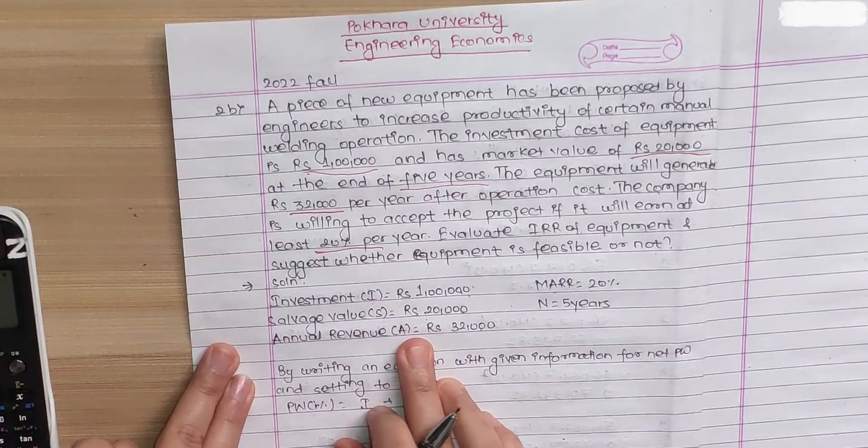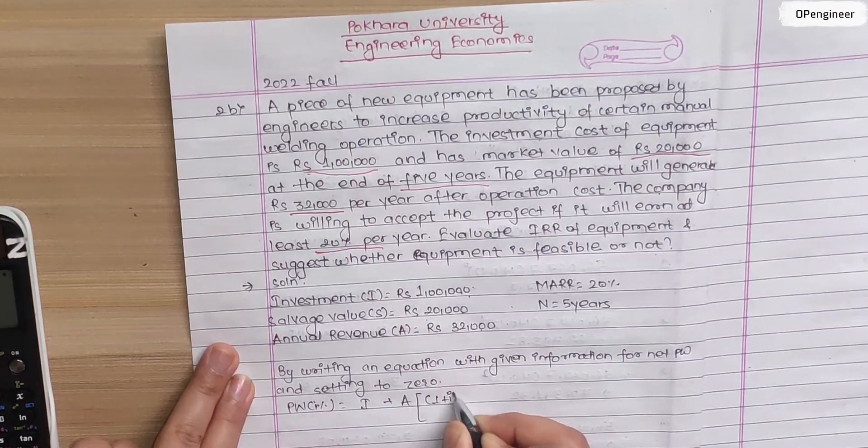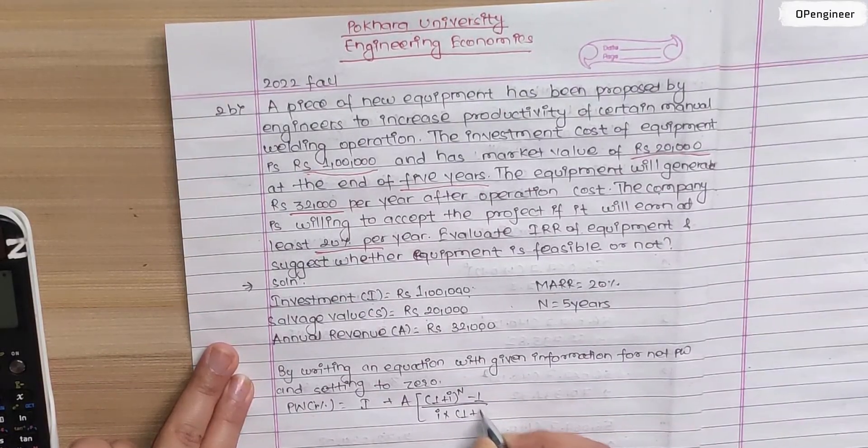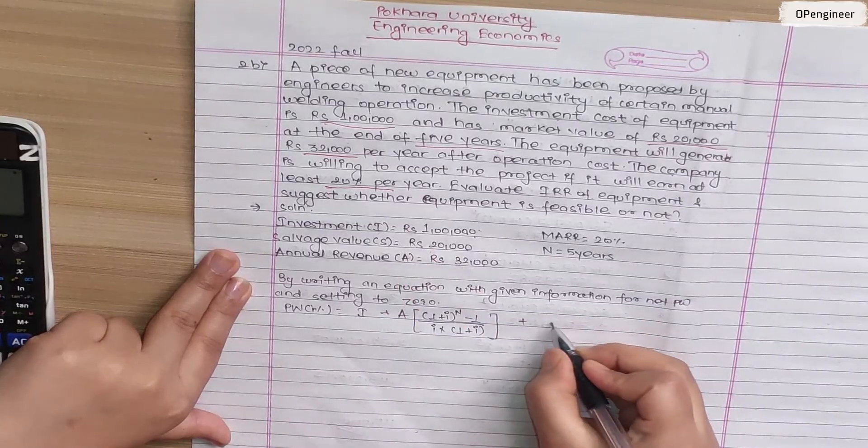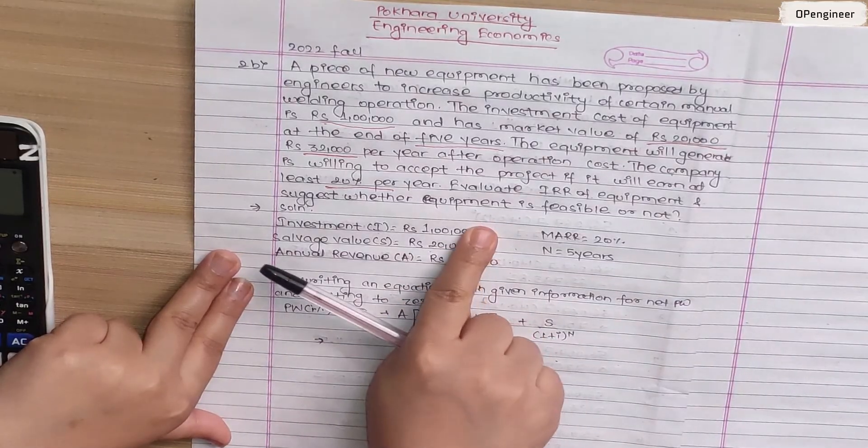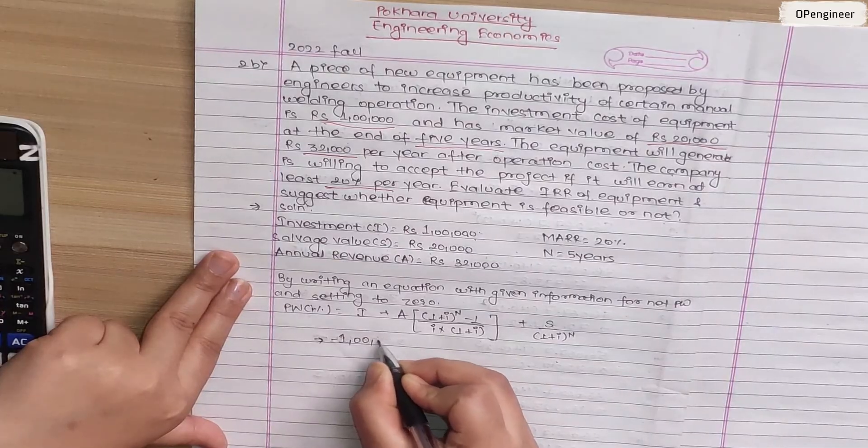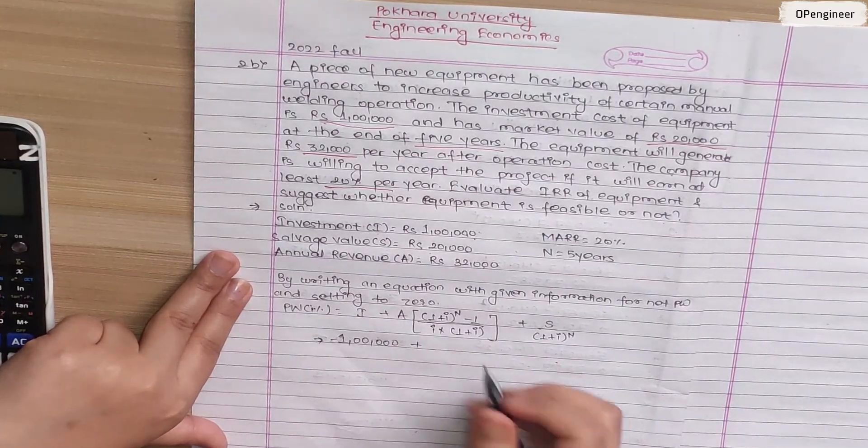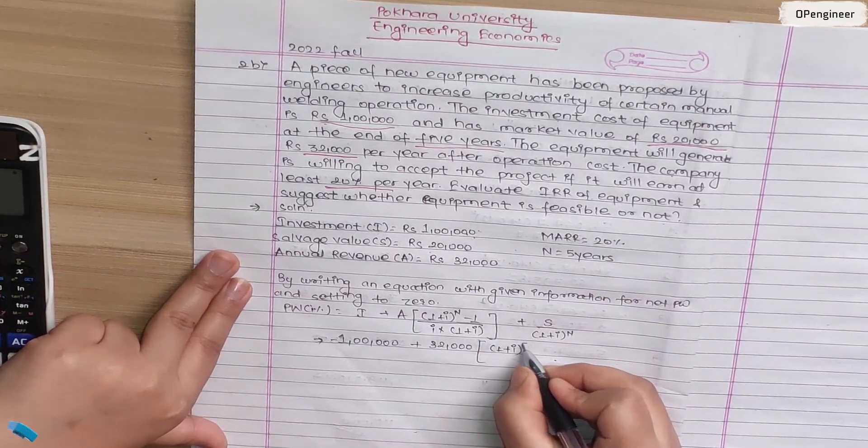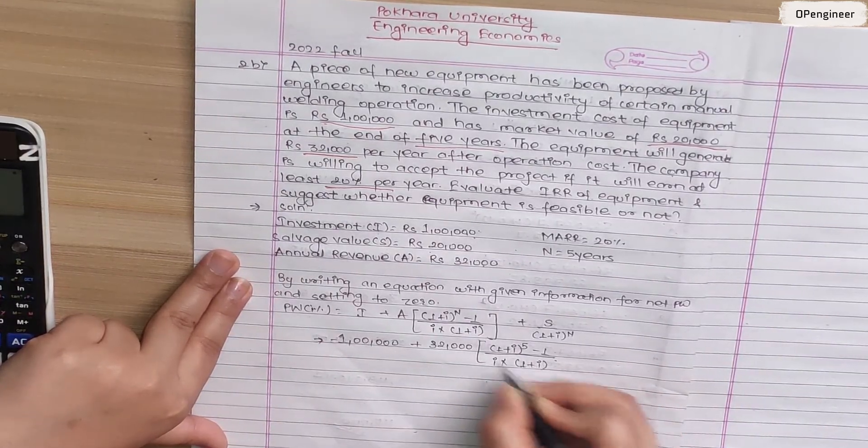The present worth equation: minus investment plus annual revenue A[(1+i)^n - 1]/[i(1+i)^n] plus salvage value S/(1+i)^n. So minus one lakh plus 32,000[(1+i)^5 - 1]/[i(1+i)^5] plus 20,000/(1+i)^5.